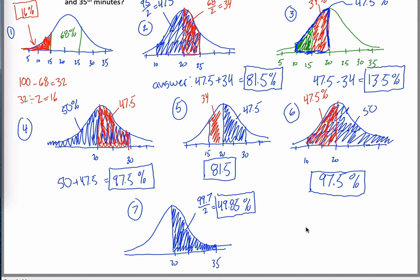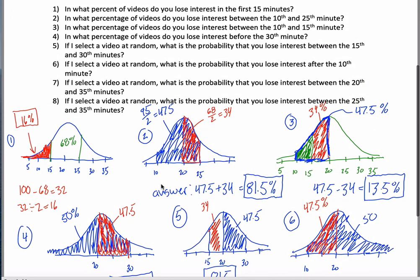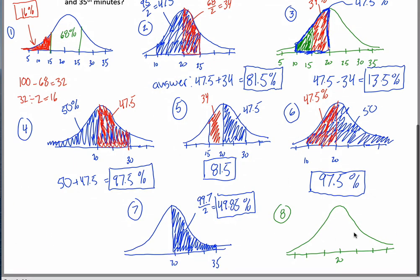Finally, number 8. Let's switch back to green. It's been blue for a while. For no apparent reason. Here's my beautiful picture. Because I know I'm going to draw one. Here's 20 minutes. 25, 30, 35. 15, 10, 5. What's the question? If I select a video at random, what's the probability that you lose interest between the 25th and 35th minute? Good one to end on because this one's hard too. There's 25. Here's 35. I want this little slice right here.